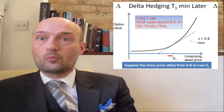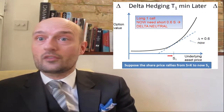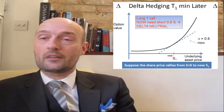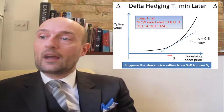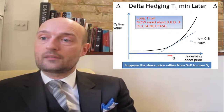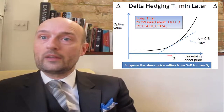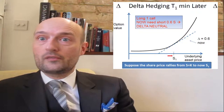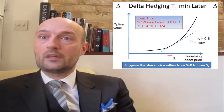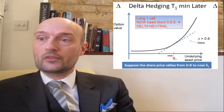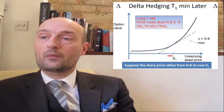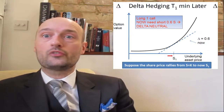No sooner have we hedged ourselves than the price of the underlying rises. The first thing we always do when we're Delta hedging is recalculate our Delta. We calculate our Delta again and find that at the new price the Delta is now 0.6. We're short 50 shares but we now need to be short 60 shares, so our trader sells another 10 shares and once again we're Delta neutral.